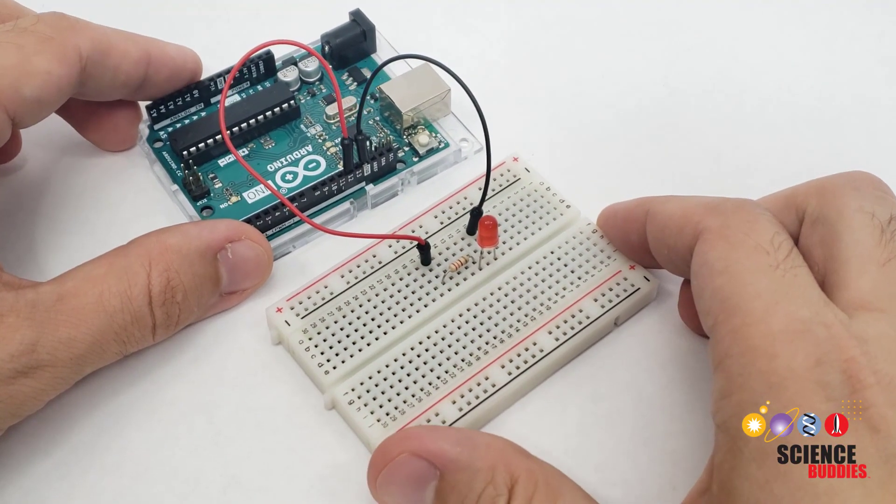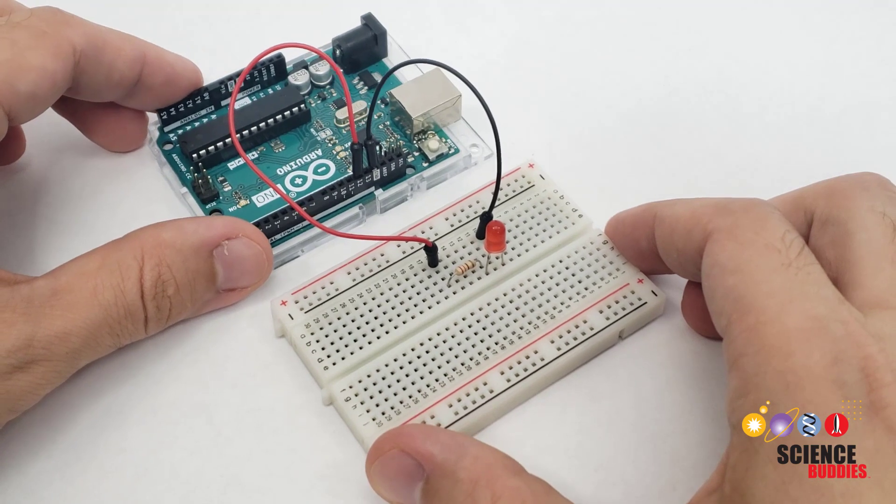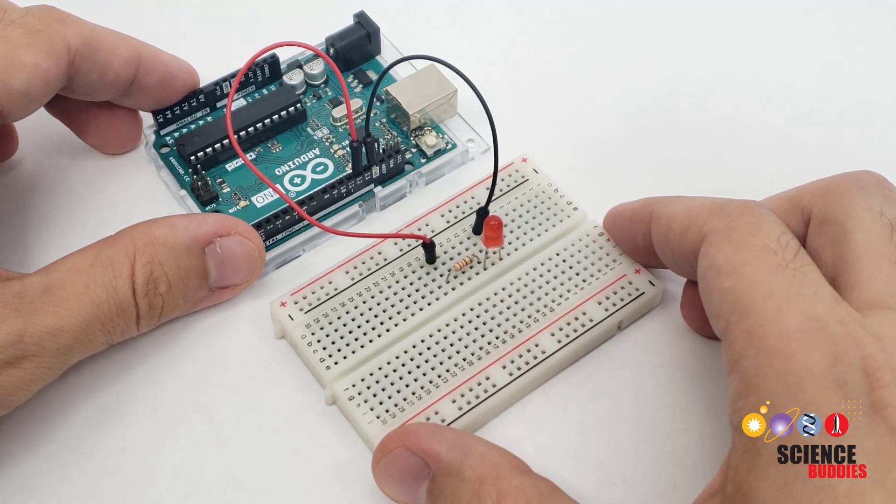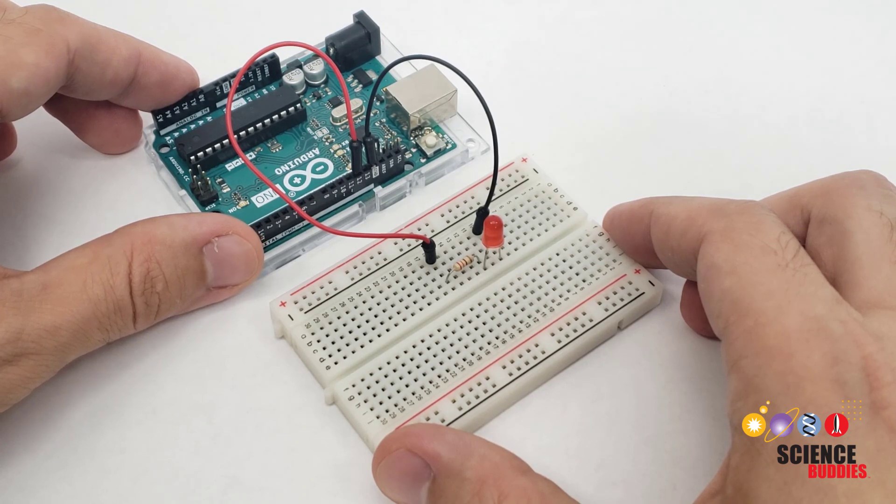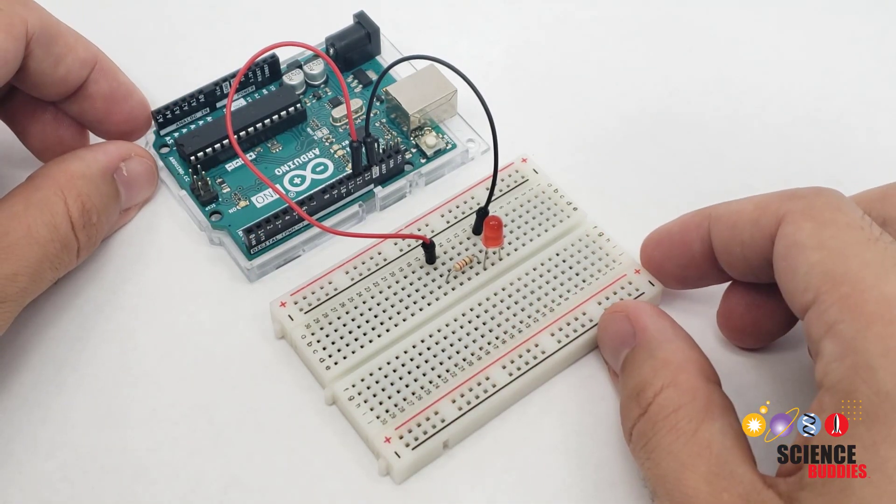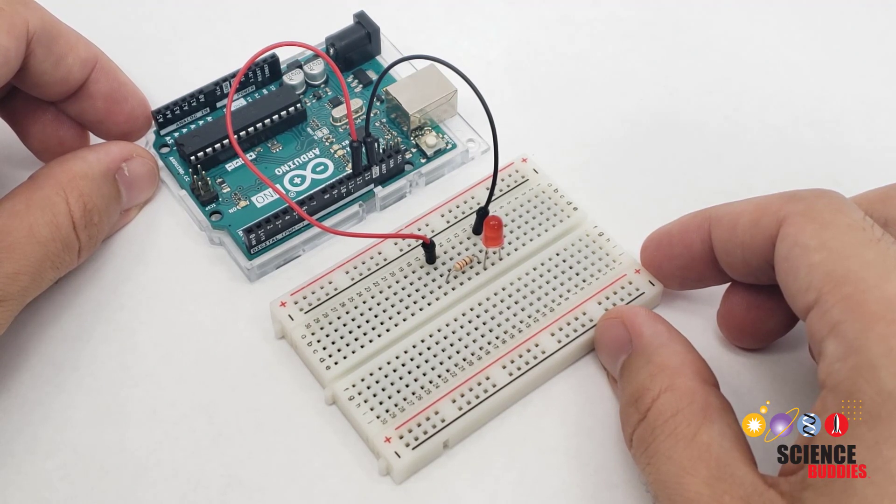Now, if at any point when following along with this video, your circuit didn't work as expected, that's okay. Even experts make mistakes, and it's easy to make simple mistakes when you're first getting started with circuits. Next up, we'll talk about some troubleshooting steps you can take to identify and fix problems in your circuit and your code.